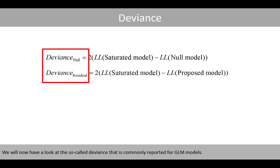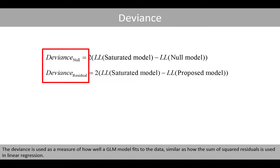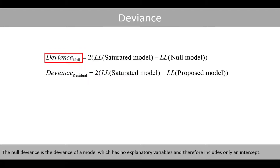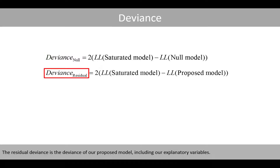We will now have a look at the so-called deviance that is commonly reported for generalized linear models. The deviance is used as a measure of how well a GLM model fits to the data, similar to how the sum of squared residuals is used in linear regression. The null deviance is the deviance of a model which has no explanatory variables and therefore includes only an intercept. The residual deviance is the deviance of our proposed model, including our explanatory variables.